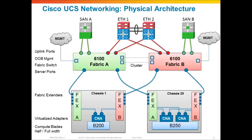We would typically deploy two Fabric Interconnects for high availability and redundancy — Fabric A and Fabric B, shown here in green and red. To create that cluster interconnect, we use a special cluster link between the two Fabric Interconnects. These are point-to-point gig links used solely for creating this highly available cluster, for synchronizing the configuration between the two fabrics, and for synchronizing state information. There is never any data traffic that flows through that cluster link — it's really not in the data path at all. It's just in the management and configuration plane.